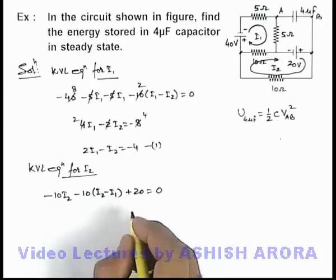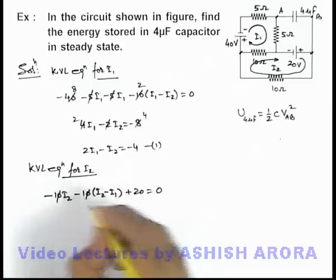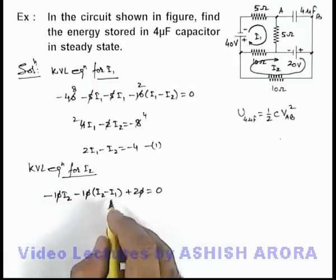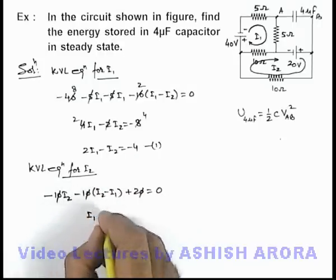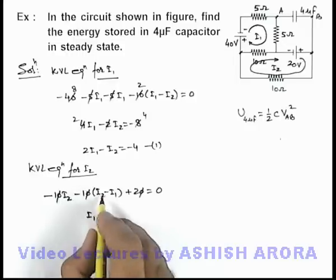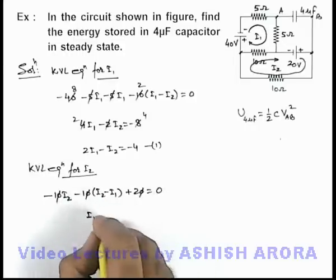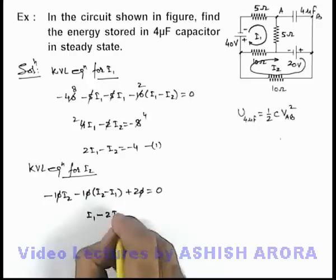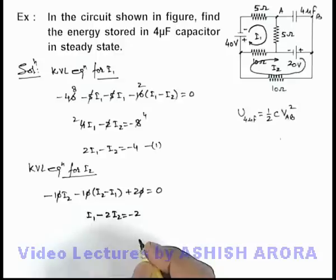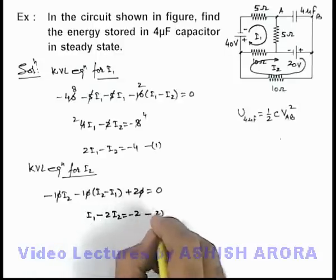Now if we further simplify, you can see this will give us i1. If we take this on the right hand side, this'll be i1 minus 2i2 equals minus 2. This is equation number 2.